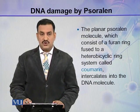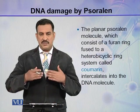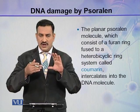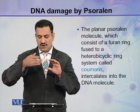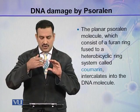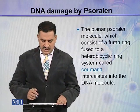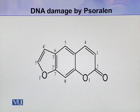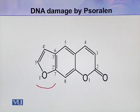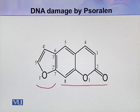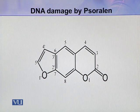Psoralen intercalates into the DNA molecule. It is a planar molecule consisting of one furan ring and two more rings called coumarin. These three rings intercalate into the DNA molecule. Here is the structure of psoralen — this is the furan ring, which is a five-membered ring, and this portion is coumarin. Being a planar molecule, it can intercalate in the DNA.